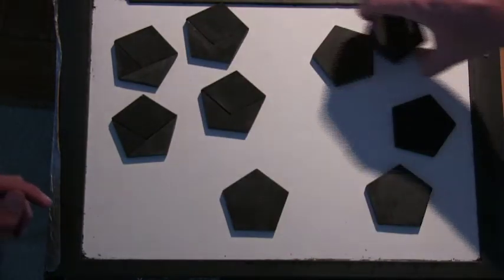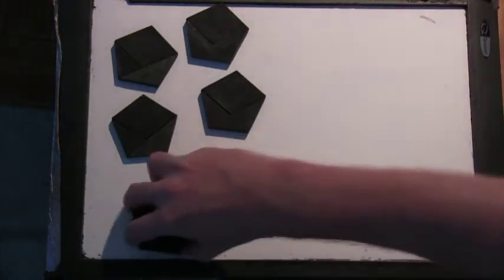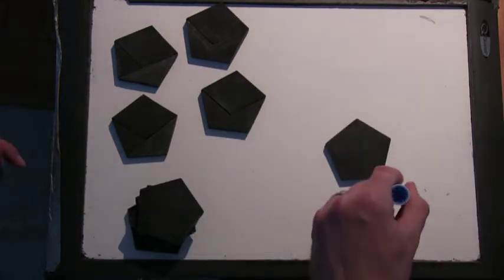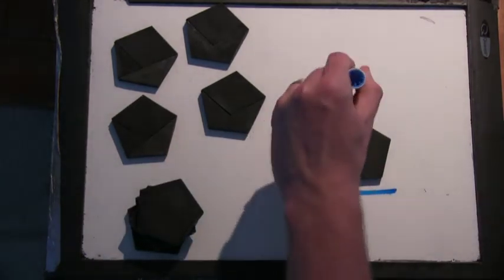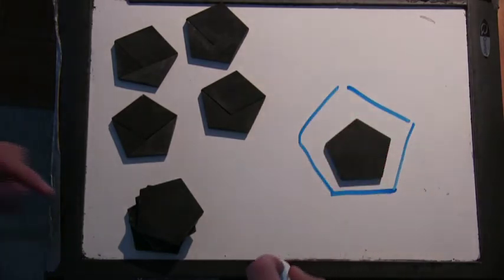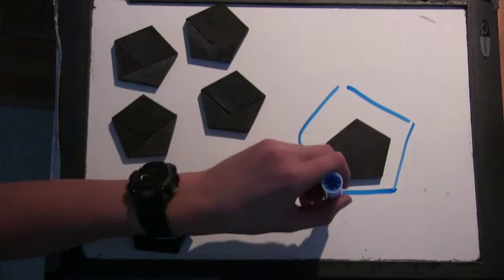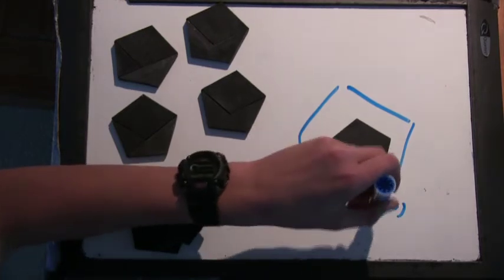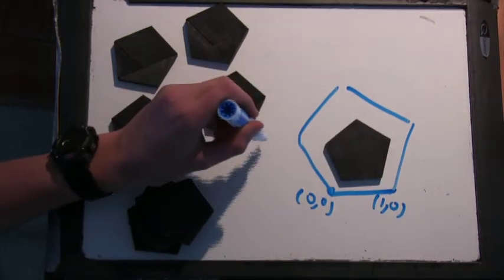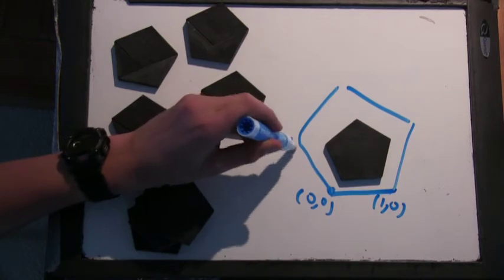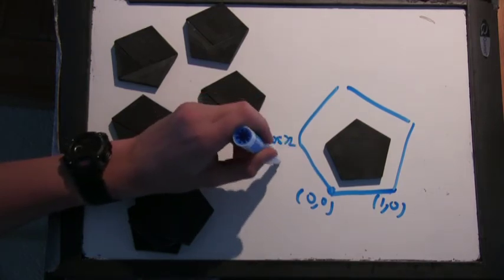This may give you a little bit more room. And then you can draw around the pentagon and label some other points. So this is zero, zero. This is one, zero. This was minus cosine 72, sine 72.